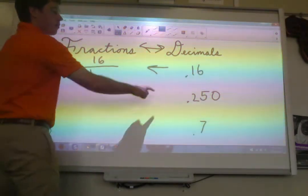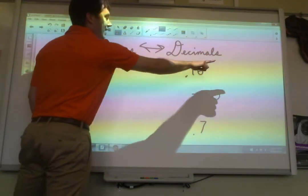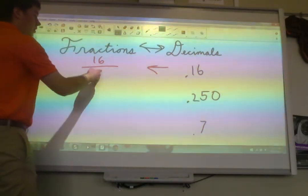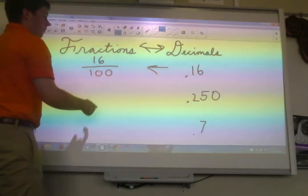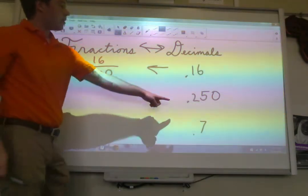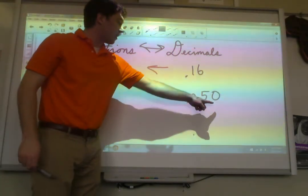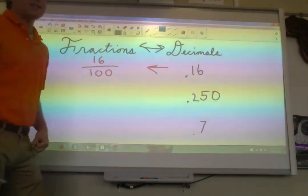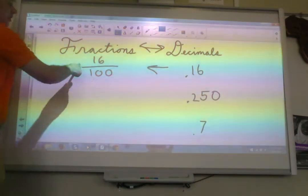On the bottom of your fraction, you're going to put the number 1, followed by as many zeros as you need to equal the number of digits behind the decimal here. So here's what I mean. 0.16 has two numbers behind the decimal, so you need to put in two zeros. Looking ahead, 0.250 has three numbers behind the decimal. You're going to need to put three zeros. Okay? But let's finish this one off first.